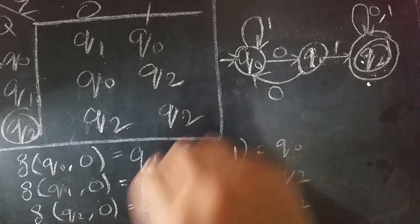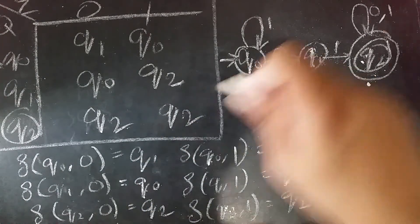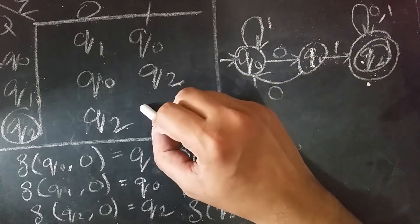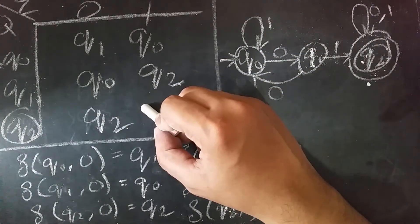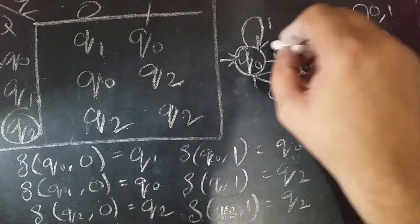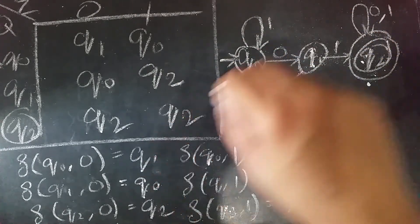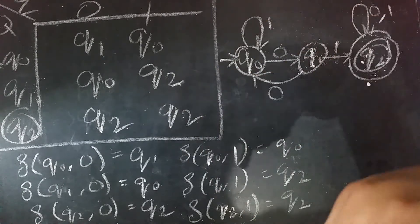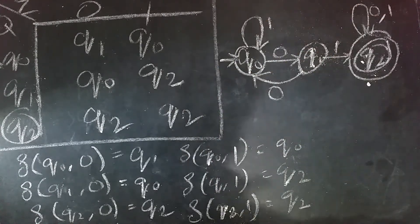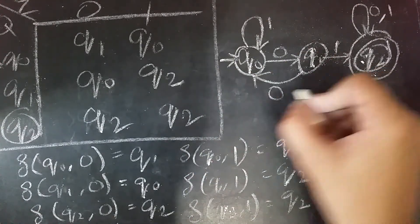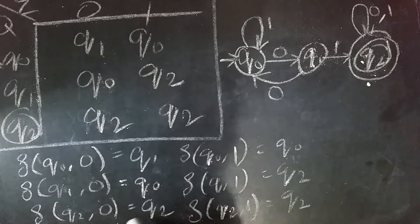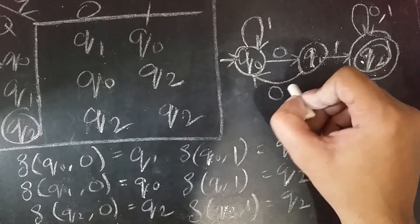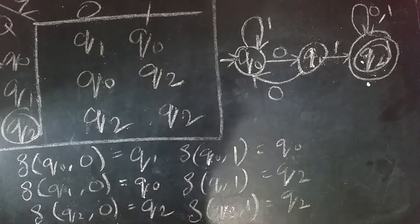These are three different ways to represent a finite automata: using a transition function, using a transition diagram or state diagram, and using a transition table or state table. We can convert each of them into one another — if we have either one, we have all of them. Generally, we use either the diagrams or the tables, as the transition function is rarely used since it is cumbersome, while the diagram and table are very easy to understand and operate on.